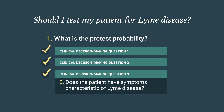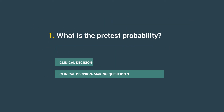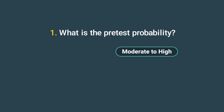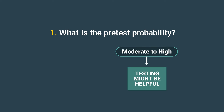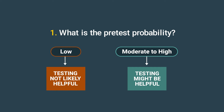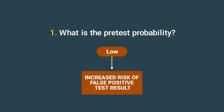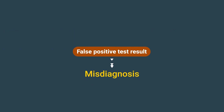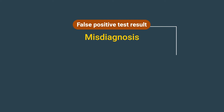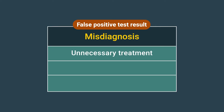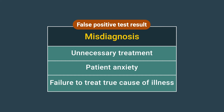When the answer to all three questions is yes, pre-test probability is moderate to high, and testing might be helpful. When the answer to one or more of these questions is no, pre-test probability is lower. A patient with low pre-test probability for Lyme disease has an increased risk of a false positive test result, which can lead to misdiagnosis. Misdiagnosis can result in unnecessary treatment and patient anxiety, as well as failure to treat the true cause of illness.